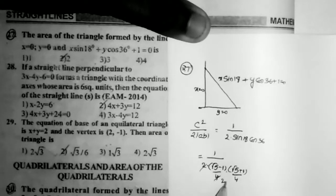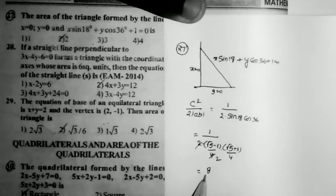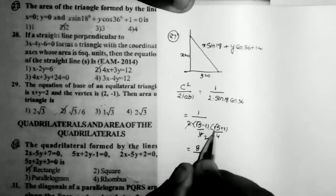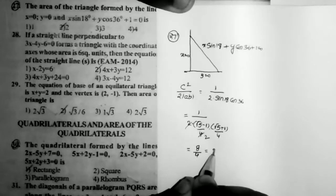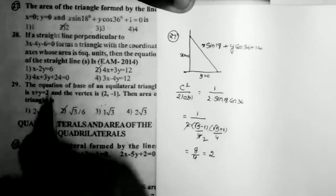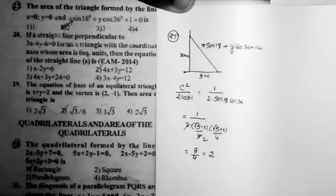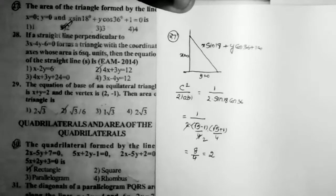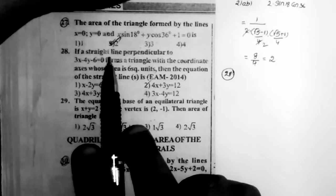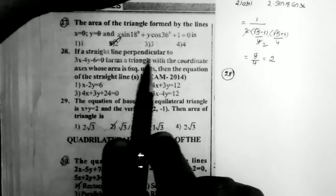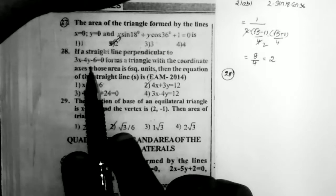This simplifies: cancelling gives 8 / (5 - 1) = 8/4 = 2. So the answer is 2, which is the second option.